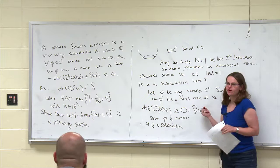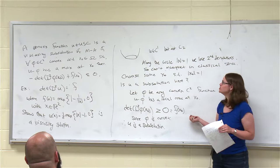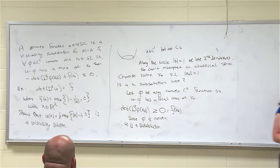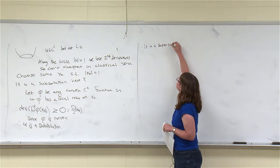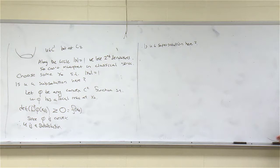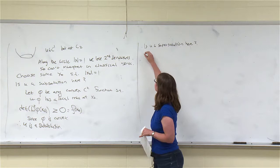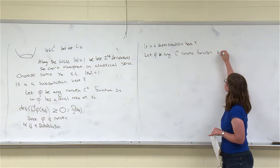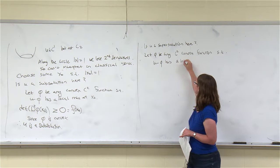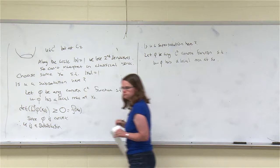It feels a little strange — u didn't really come up at all. It was just the fact that u was convex and that f vanished at this point that was enough. For the supersolution, we have a little more to check. Same game, but max becomes min. Let phi be any C2 convex function such that u minus phi has a local minimum at x0. This time things don't just fall out automatically, so we have to do some work.